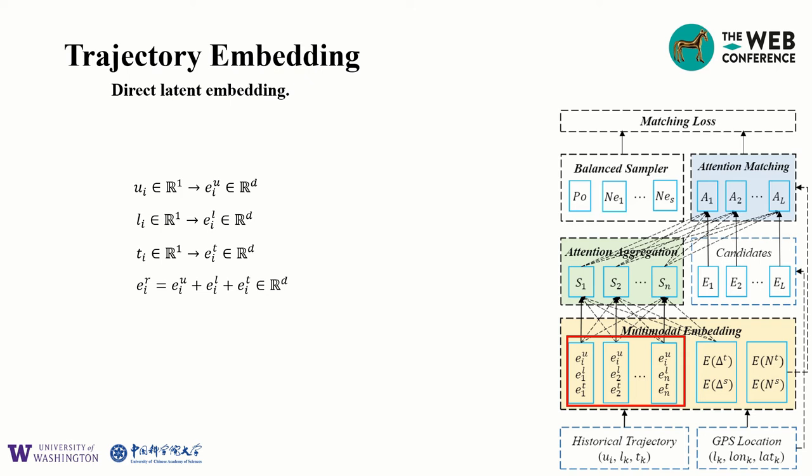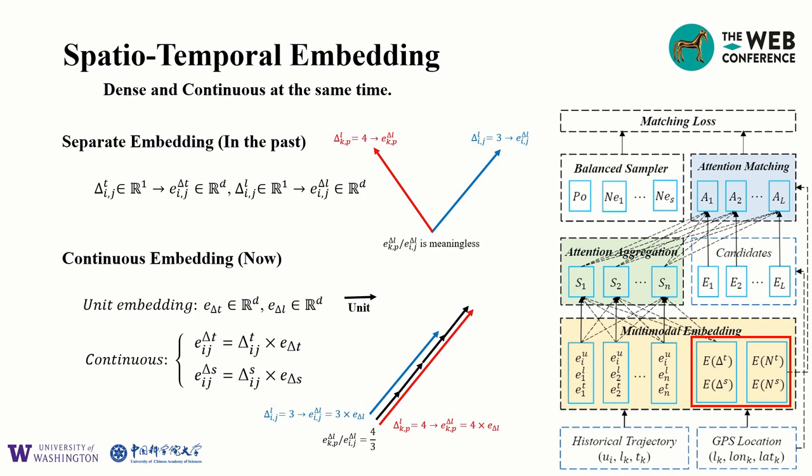Before feeding the data into the neural network, we inherit from previous works to use direct latent embedding. Then we propose a continuous spatiotemporal embedding that reflects the continuity of spatiotemporal effect. In the past, the discrete embedding is a fixed dictionary where each embedded vector points to a different direction, which doesn't reflect relationships. However, if we set a unit embedding as the embedding of 100 meters and one hour, for example, we can directly represent one kilometer and 10 hours as 10 times the unit embedding. Consequently, the actual spatial distances and temporal intervals are still reflected within the embeddings, and meanwhile, the computational complexity is reduced. So we can achieve dense and continuous at the same time.